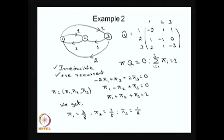Instead of solving πQ = 0, you can use the time reversibility approach, but first you should verify whether the time reversibility equations are satisfied by this model. If they are satisfied for all i, j, then you can conclude it is a time reversible Markov chain. Example 1 is a time reversible Markov chain, whereas example 2 is not — you can verify it.